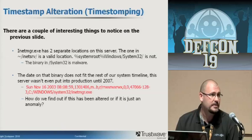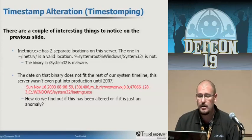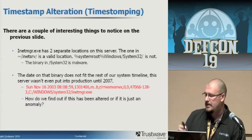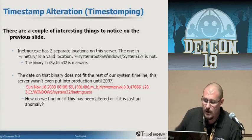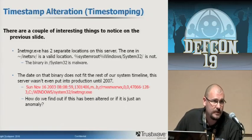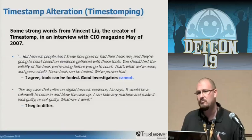The server this image came from wasn't even built until 2007. You see Sunday, November 16, 2003 as both the modified and birth date — the M and B timestamps. So how do we find out if this is just an anomaly or if it's been forcibly altered? It's actually easier than it sounds. But before we do that, let's talk about Vincent Liu, who created the utility called Timestomp.